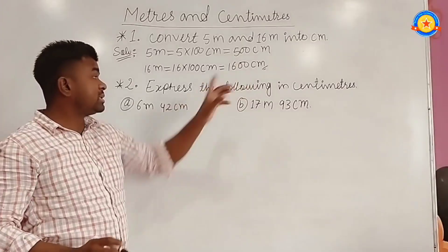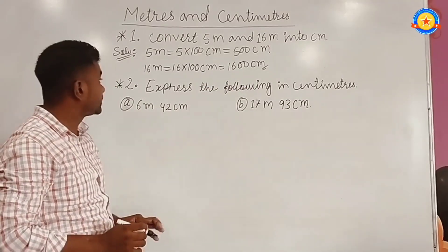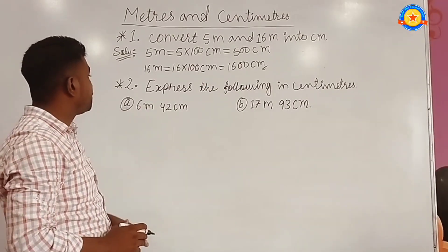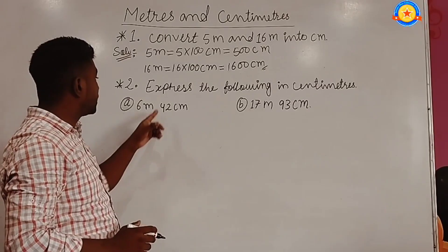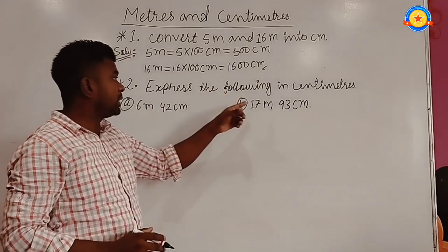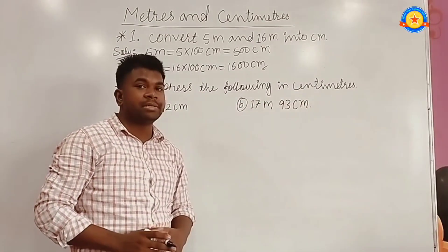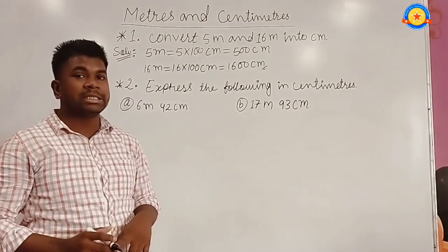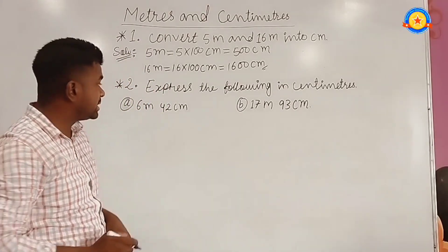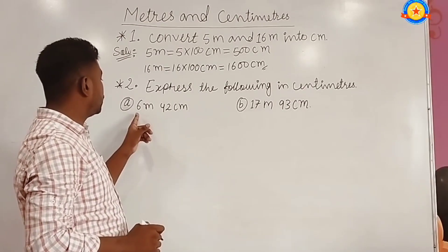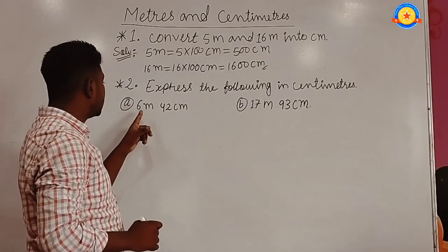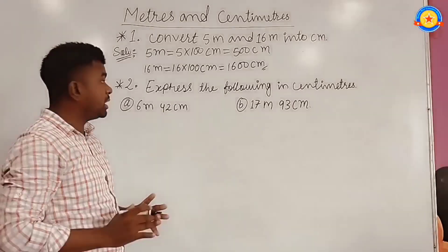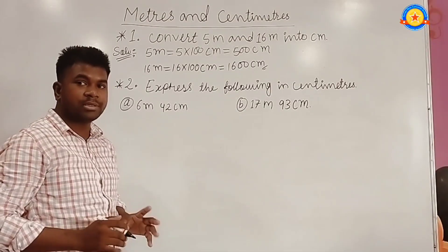1600 centimeters is the answer. Now the second question: express the following in centimeters. In number (a) we have 6 meters 42 centimeters, and we have to express that in centimeters.